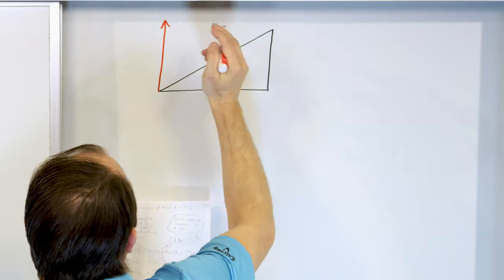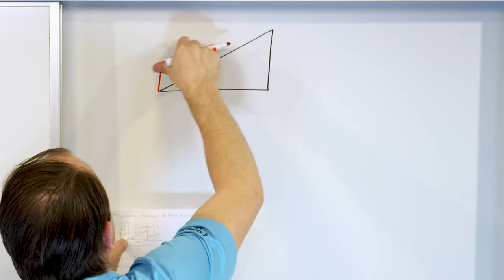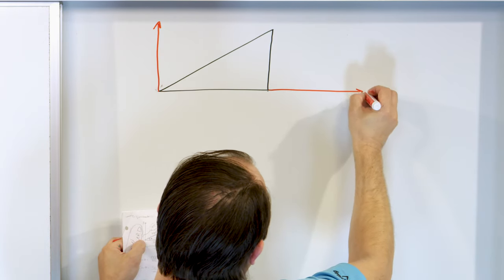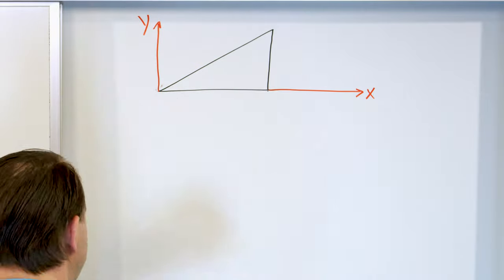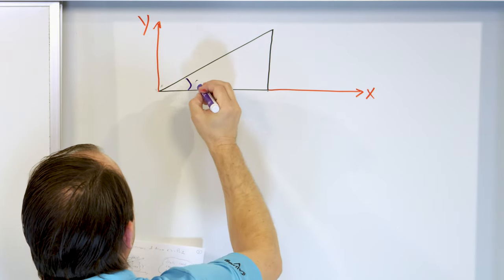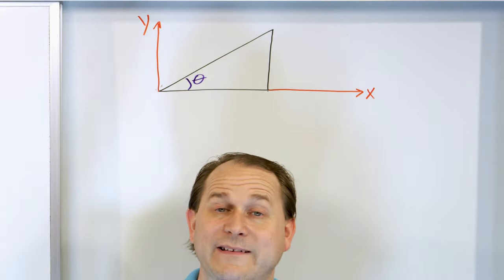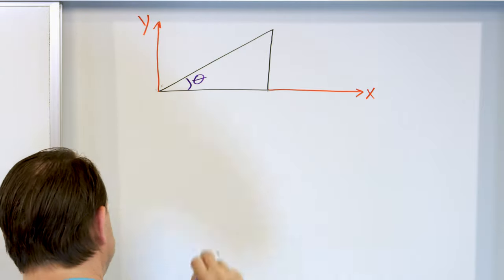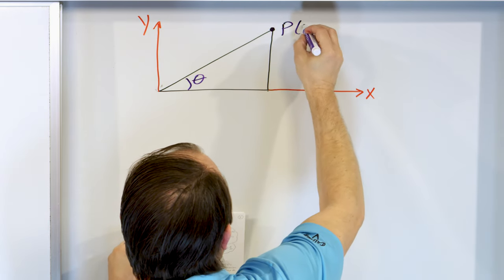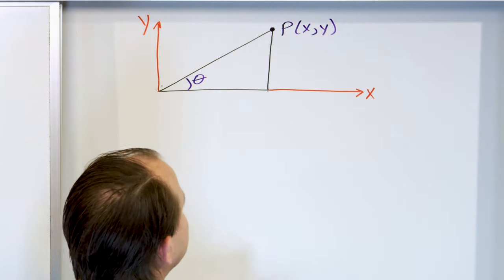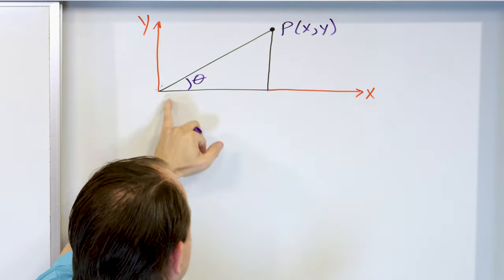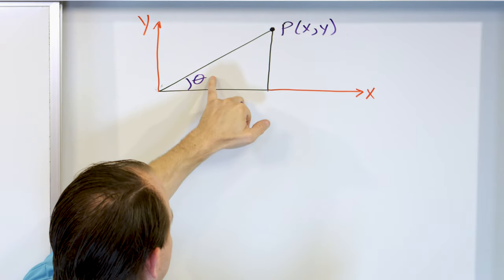The y-axis goes straight up and down, and the x-axis goes across. There is some angle theta — this ray right here makes some angle theta with the x-axis. Remember, all angles are measured with respect to the positive x-axis. The tip of this ray forms some point P at the end, and that point has some x and y coordinates. When you connect this point to the origin, it forms the angle theta.